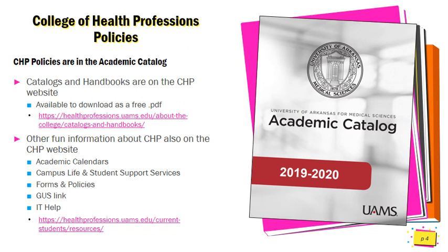We'll start with the UAMS College of Health Professions policies. These are the college-level policies that all programs within this college must follow. These are found in the UAMS Academic Catalog, which can be found on the CHP website and can be downloaded for free as a PDF file. The link is available under Catalogs and Handbooks on the CHP website — if you click that link, it should take you to the downloadable PDF version.